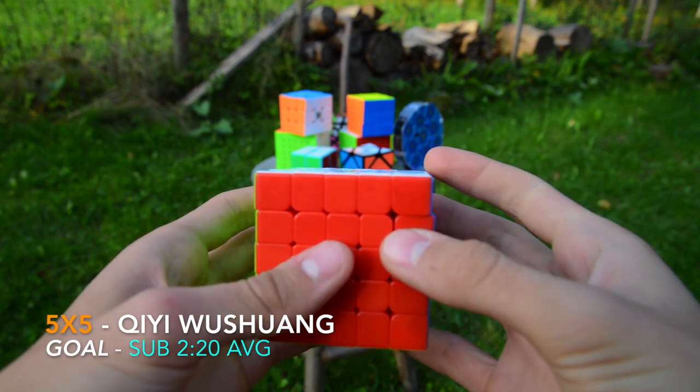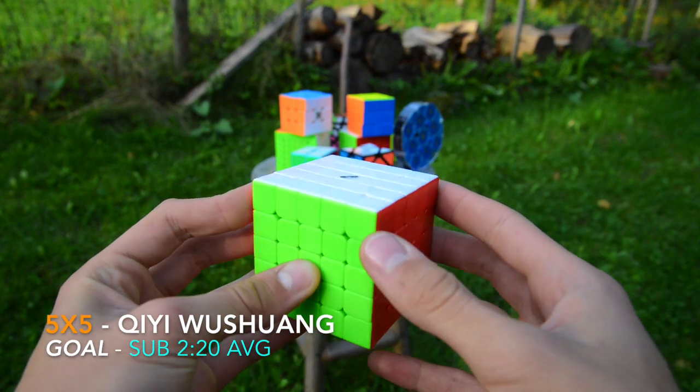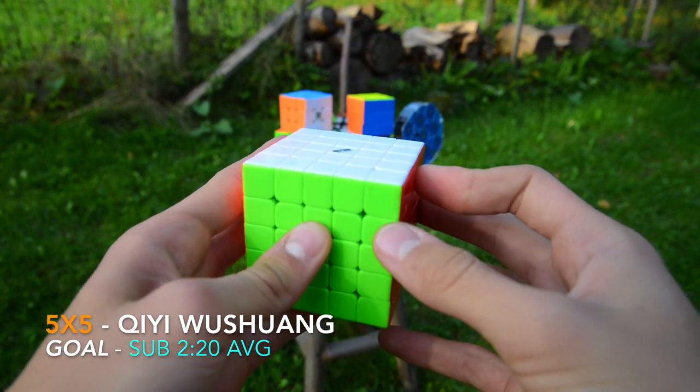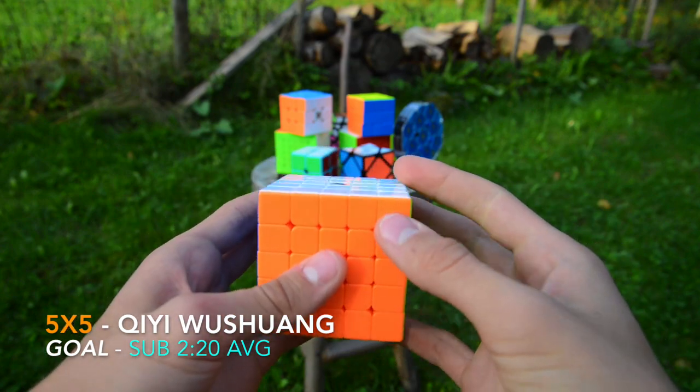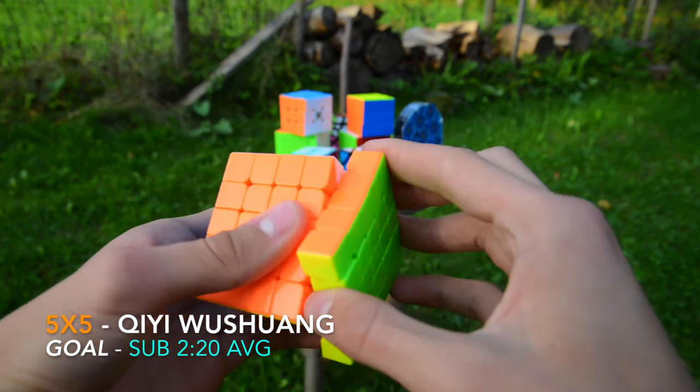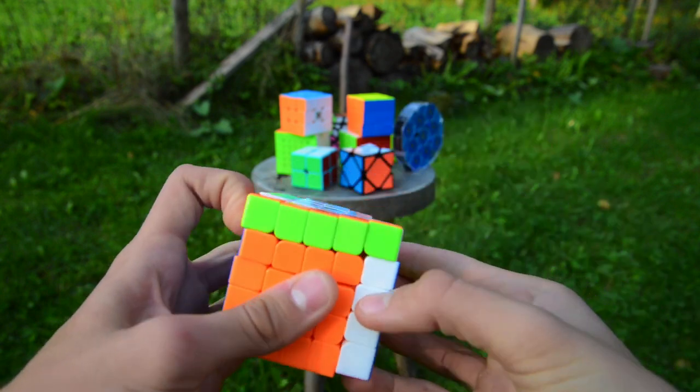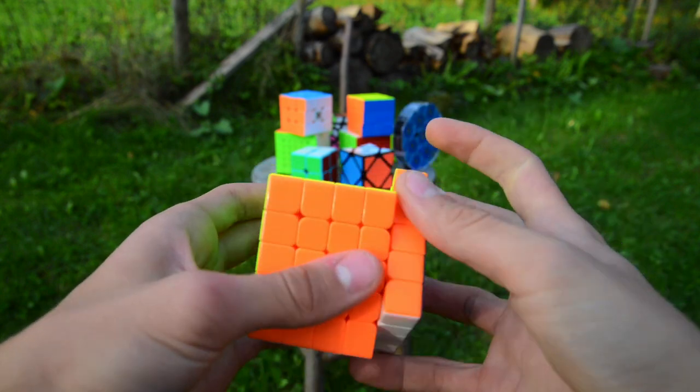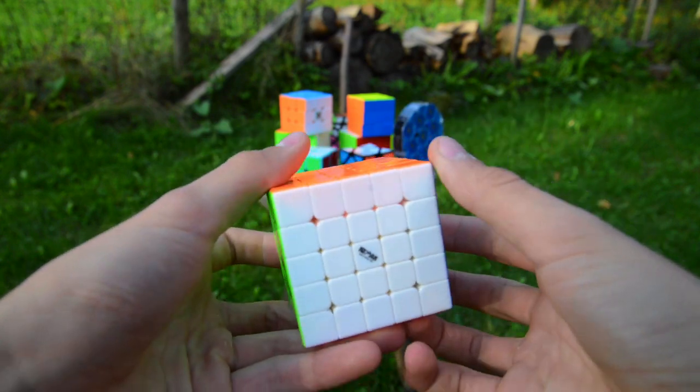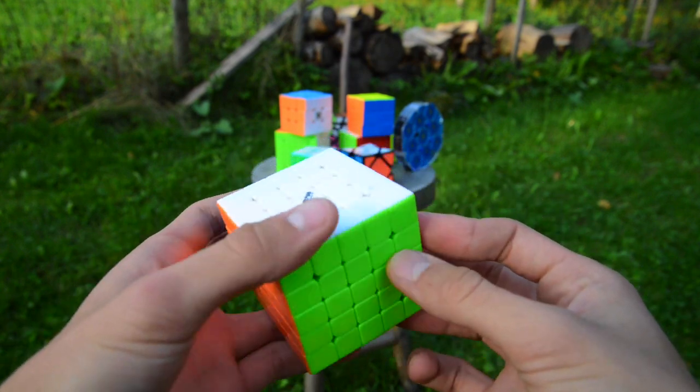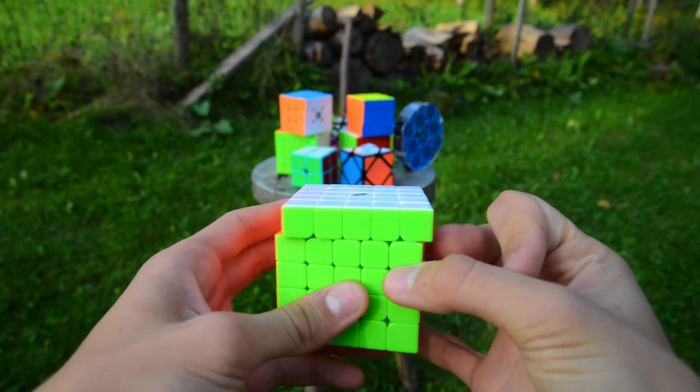Next event is 5x5 and this is my main, the Qiyi Wushuang 5x5. This cube is really nice and my goal is a sub-2:20 average. Maybe if I get lucky I'll get a sub-2 single, but luck is not the goal.